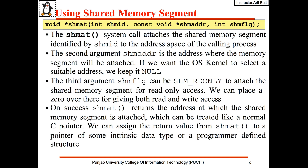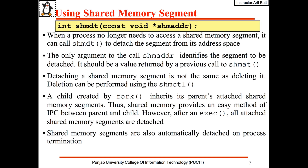The returned address can be treated like a normal C pointer. After we have used the shared memory segment, a process normally detaches it using the shmdt call. The only argument to this call is the address which identifies the segment to be detached — this is the value returned from the shmat call. Remember, detaching a shared memory segment is not the same as deleting it; we can always delete it using the shmctl call.